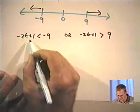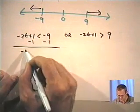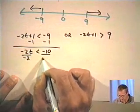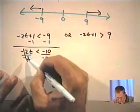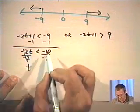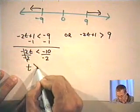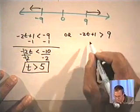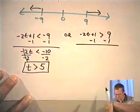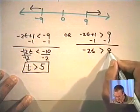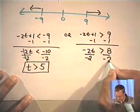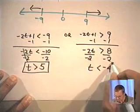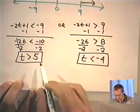Let's solve those two inequalities independently. For the first: subtract 1 from each side to get negative 2t less than negative 10. Dividing by negative 2 — and remember, since I divided by a negative value, I must switch the direction of the inequality — I get t greater than 5. For the second: subtracting 1 from each side gives negative 2t greater than 8. Dividing by negative 2 and switching the inequality direction gives t less than negative 4.